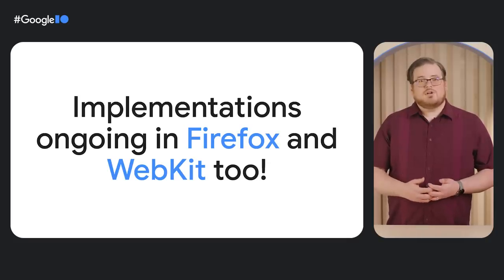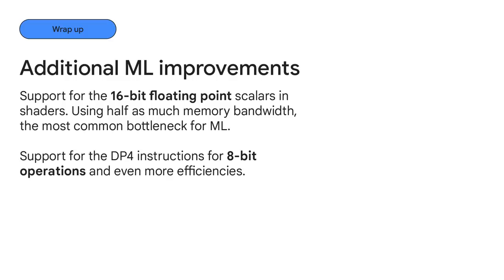And it's not just the Chrome team working on launching WebGPU — implementations are also in progress in Firefox and WebKit. Additionally, new features are already being designed at the W3C that can be exposed when available in hardware. For example, in Chrome we plan to enable support for 16-bit floating point numbers in shaders and the DP4 class of instructions soon. These will enable even more machine learning performance improvements. WebGPU is an extensive API that unlocks amazing performance if you invest in it.